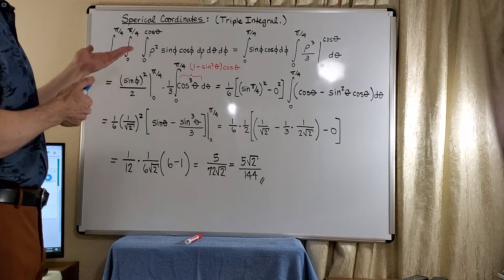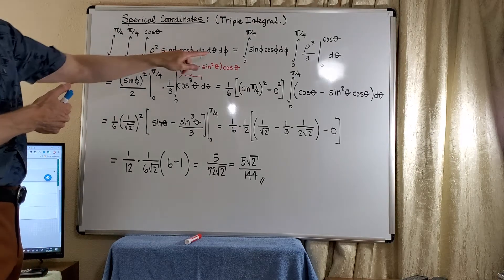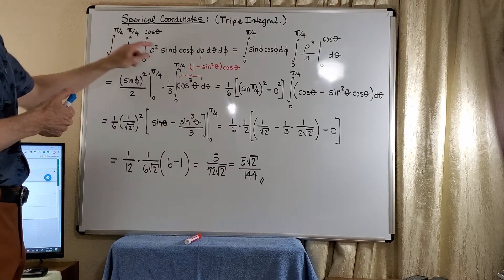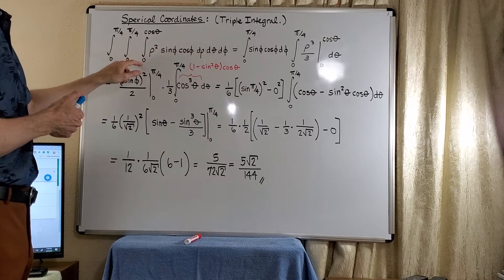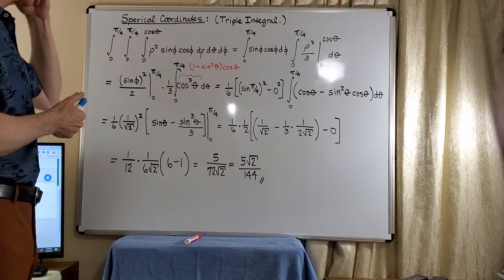So what we have is a triple integral, phi running from 0 to pi over 4, theta 0 to pi over 4, and rho from 0 to cosine theta.